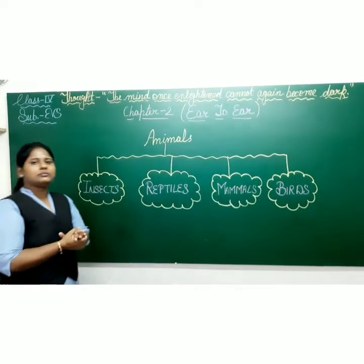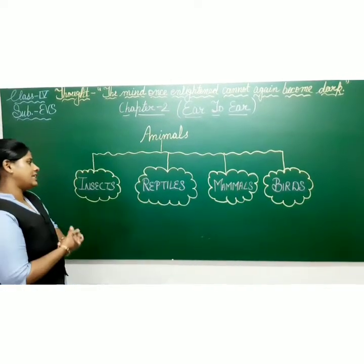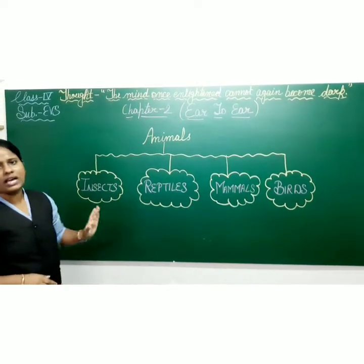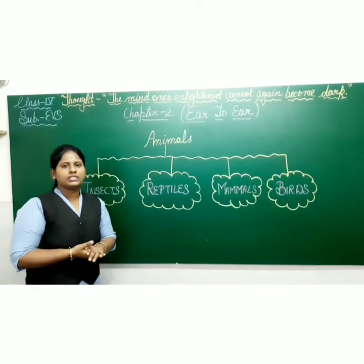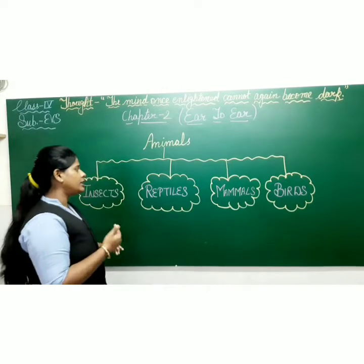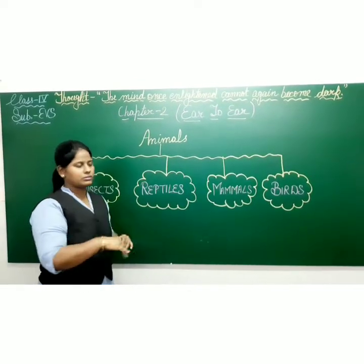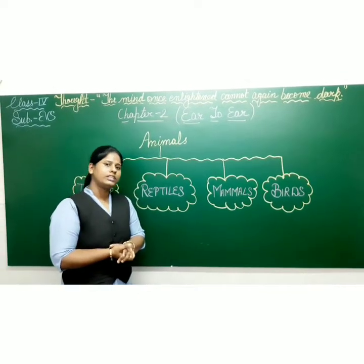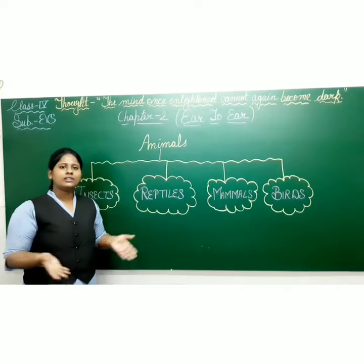Animals can be classified into four types. First is insects, second is reptiles, third is mammals, and fourth is birds. Reptiles are crawling animals — they can move through their stomachs. Mammals give birth to their young ones and can feed them. Birds are animals who have wings and they fly.